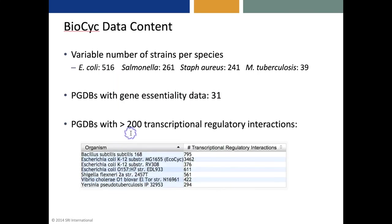BioCyc will have a variable number of sequenced strains per species. For example, we have more than 500 E. coli genomes, but only 39 for Mycobacterium tuberculosis. Some of our PGDBs contain gene essentiality data, and there are seven PGDBs that have more than 200 transcriptional regulatory interactions.